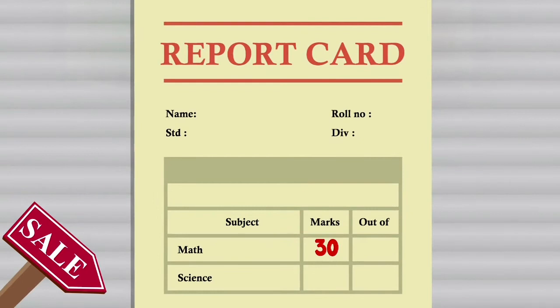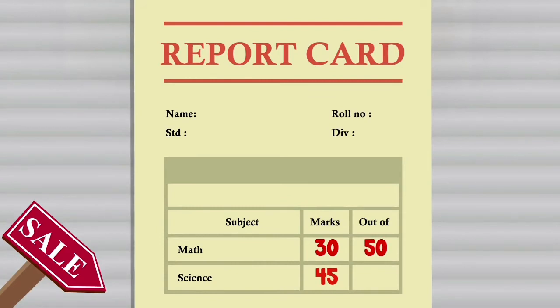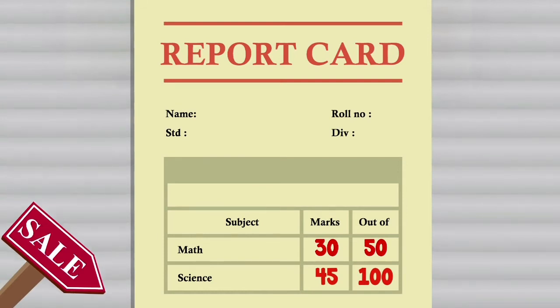You scored 30 in math and 45 in science, but your marks in math were out of 50 and those in science were out of 100. We cannot compare the marks scored directly, so we'll use the concept of percentage.